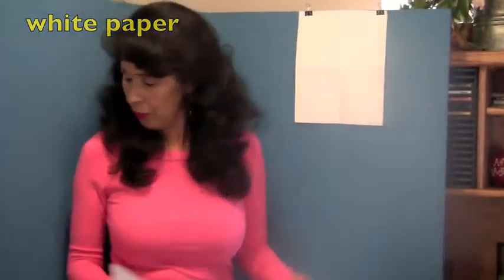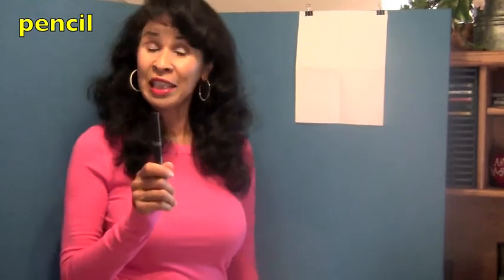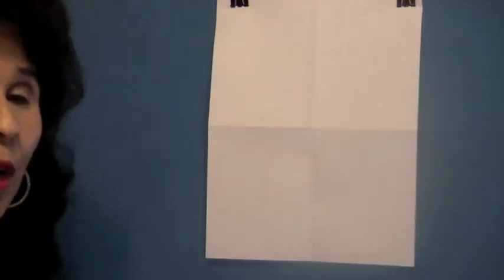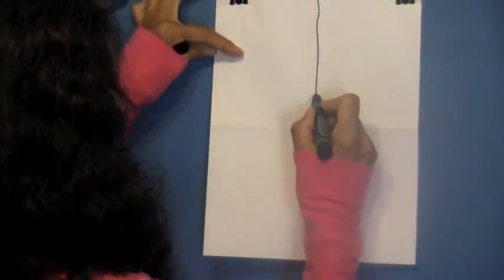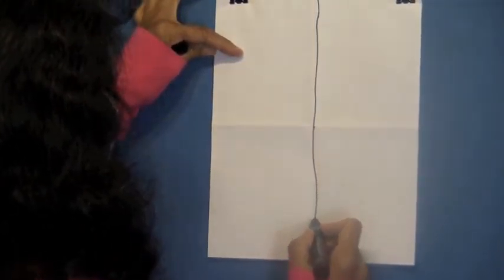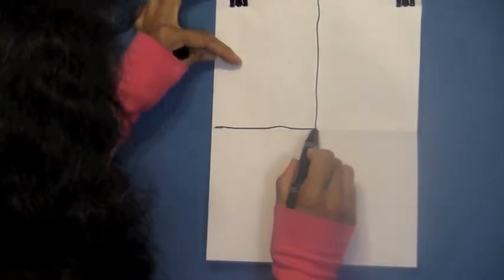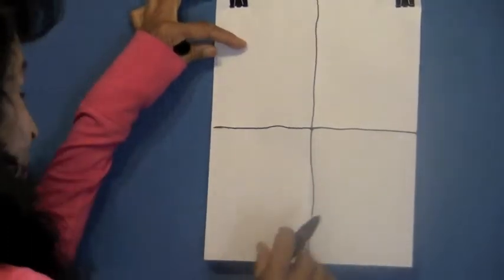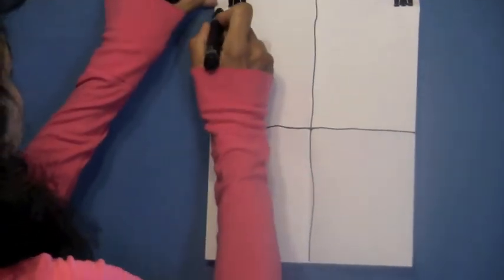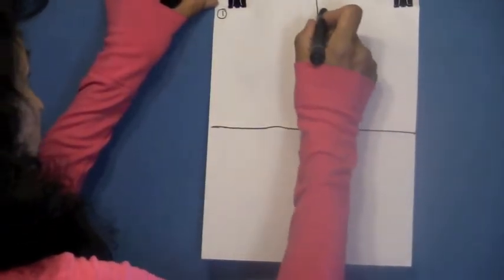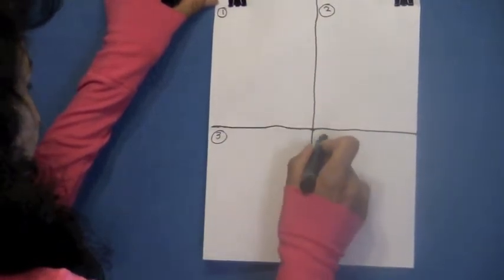I have it up here. Now I need you to get a pencil. I'm going to use a black marker so you can see what I'm doing, but I need you to use a pencil. First with your pencil, I want you to draw over those fold lines. So we make four boxes. Now, I want you to number each box. Here's box number one, box number two, box number three, and box number four.